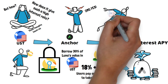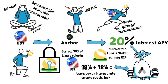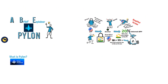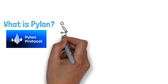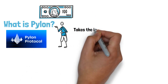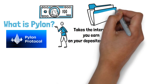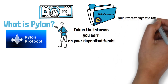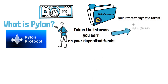So now you know what Anchor is and how it generates its yield — remember, this is the simplified version. Now let's come back to what is Pylon? Pylon enables you to put the interest you earn on your deposited funds to use in a number of different ways, like investing in new projects.